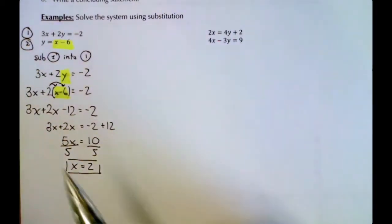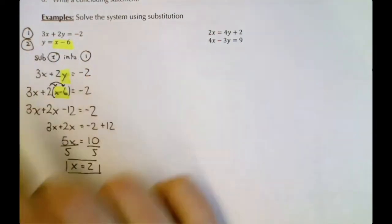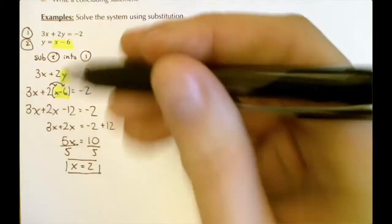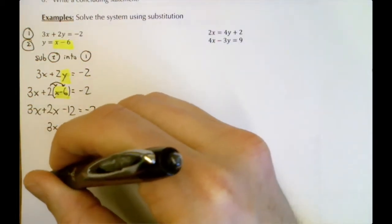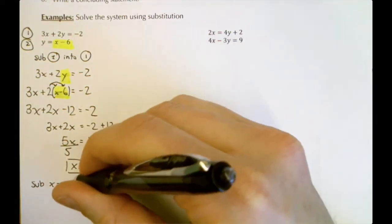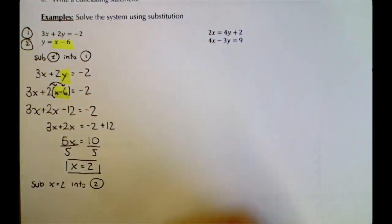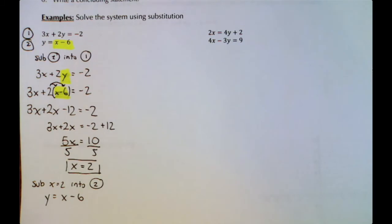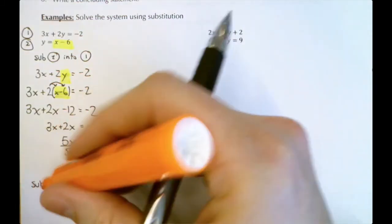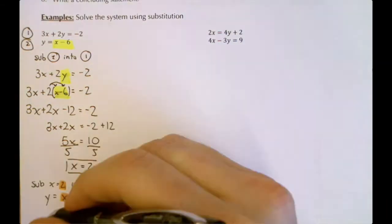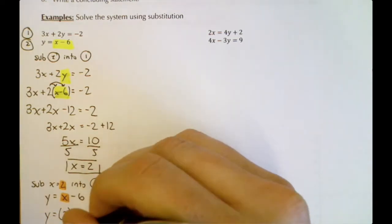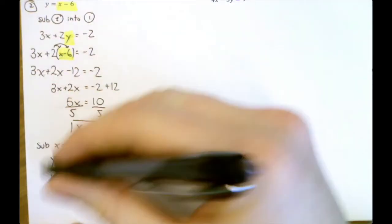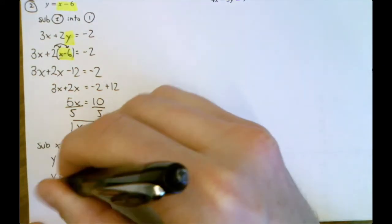I'm going to choose equation 2 because it's the simplest — it already says y equals. We substitute x = 2 into equation 2: y = x - 6 becomes y = 2 - 6. That's a second substitution where we replace x with 2. So y = 2 - 6, which equals -4. That's our answer for y.